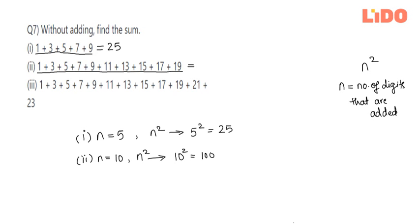So the answer for the second question - the addition of all the numbers 1 + 3 + 5 + 7 + 9 + 11 + 13 + 15 + 17 + 19 - equals 100. Let's move on.